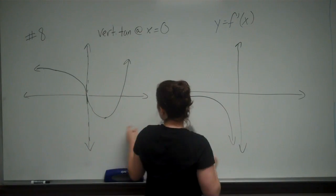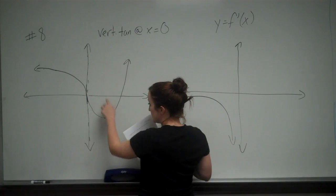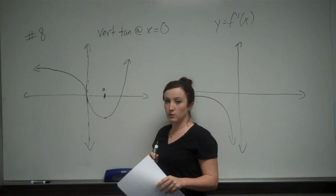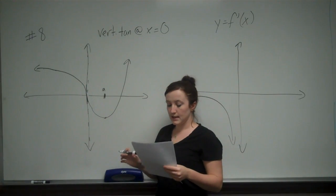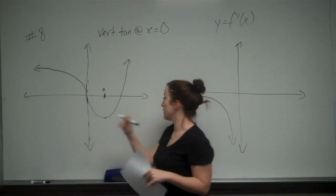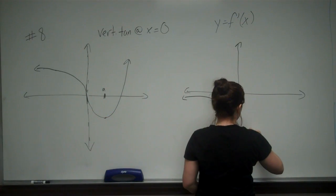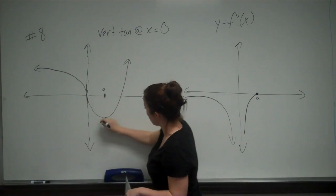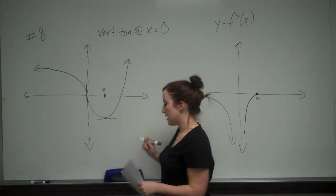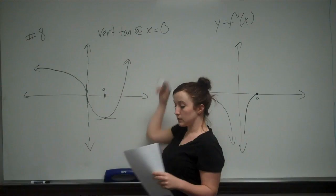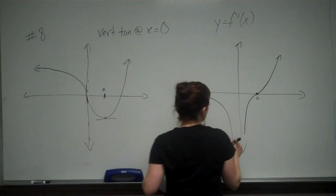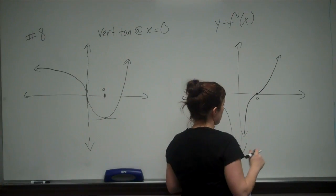And then from 0 to this value, we'll say this value of a, we still have a negative slope. But it's becoming less and less negative. But it starts from a really negative point. So we're going to start from down here and go up. And I'll say that this value here is a because at a, our slope is 0. And then from a on to positive infinity, our slope is positive. And it is steadily increasing to become more and more positive as well.